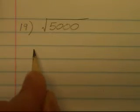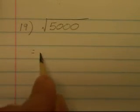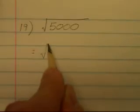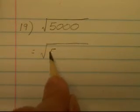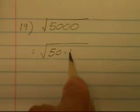So we want to look for perfect square factors of the radicand. This is 5,000. You can try and do it in one step, but there's nothing wrong with doing it in a couple steps. I can see that that's 50 times 100.